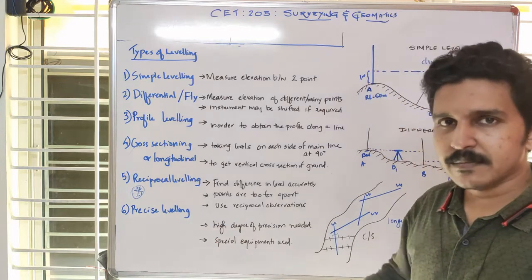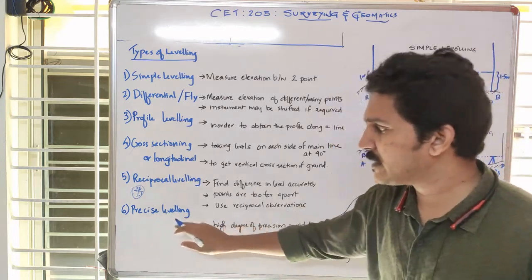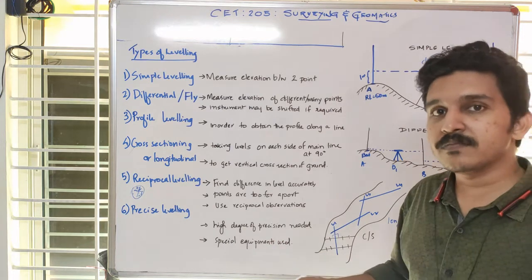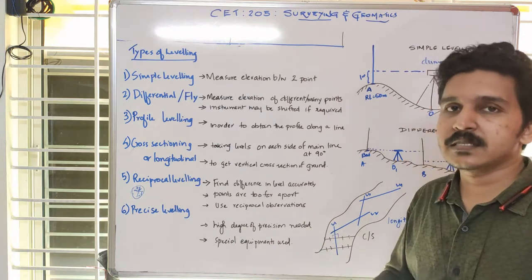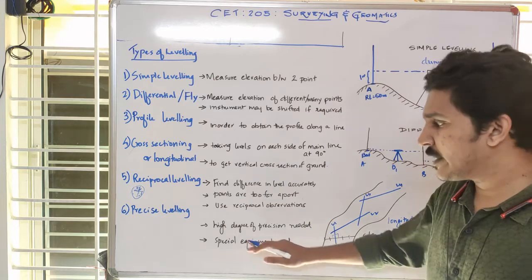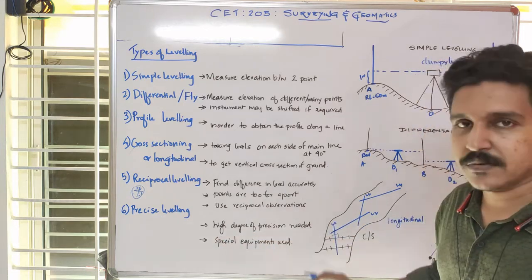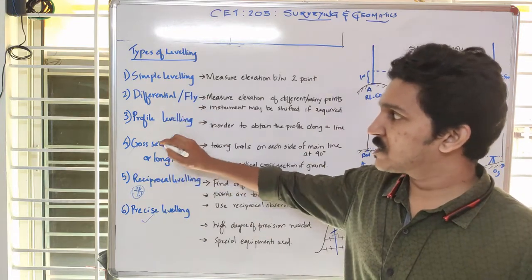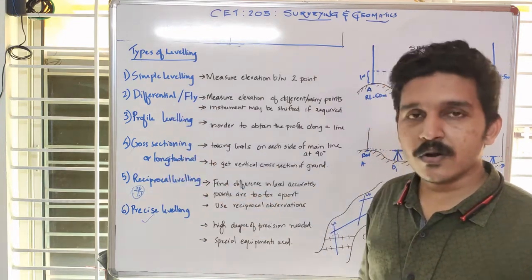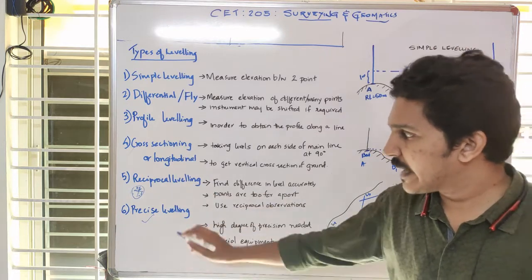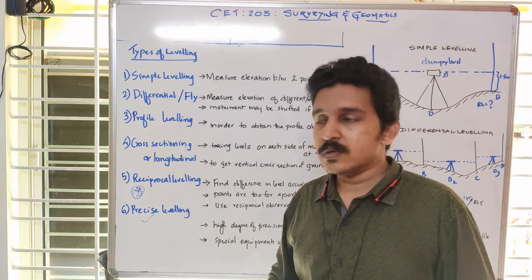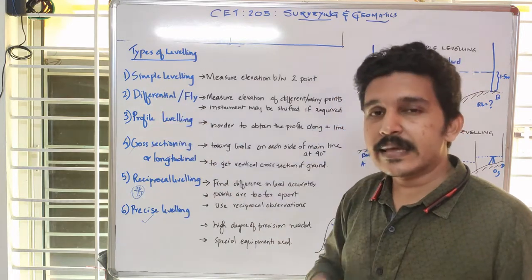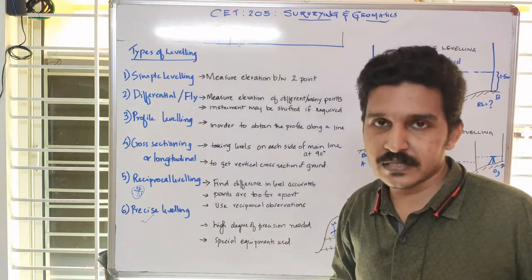Precise leveling is not as critical because, as the name implies, it simply involves a high degree of precision. Whenever leveling with very high precision is required, we use more sophisticated instruments or special equipment. So in total there are six major types: simple leveling, fly or differential leveling, profile leveling, cross sectioning or longitudinal leveling, reciprocal leveling, and precise leveling. Now we will discuss simple and differential leveling and the various terms involved.